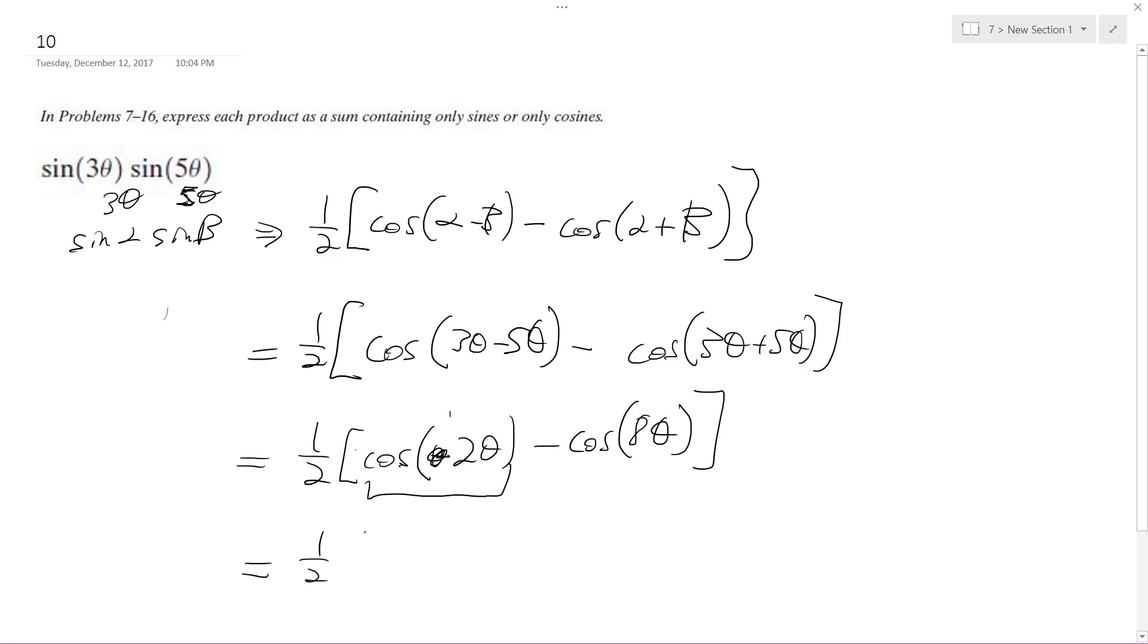So this just becomes one-half of cosine 2 theta minus cosine 8 theta. And that's it.